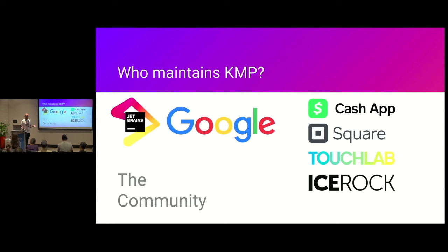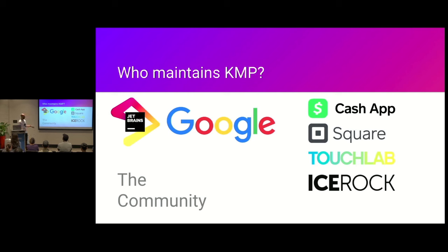Google has also invested in Kotlin Multiplatform for their own apps, in particular Google Workspace — Google Docs, etc. Other companies using and contributing to KMP include the Cash App and Square, both part of the Block group. TouchLab provides CrashKiOS. IceRock is a company that builds a large number of libraries for multiplatform including geolocation, maps, and biometrics. The community is more and more active, and KMP is answering what a lot of CTOs and engineering managers wanted: native app performance with a single codebase.